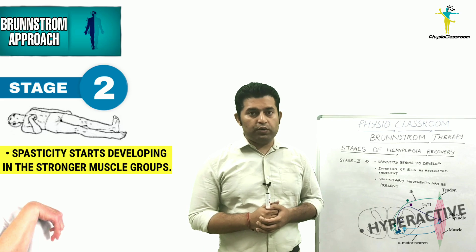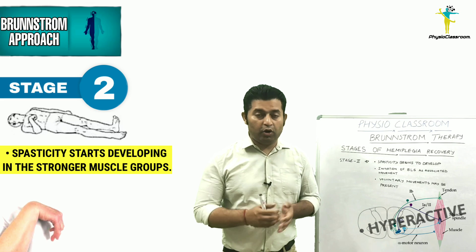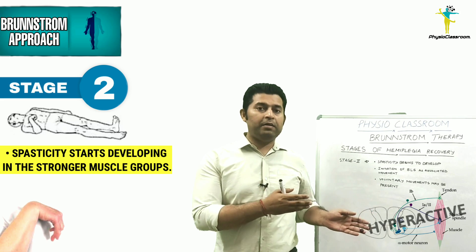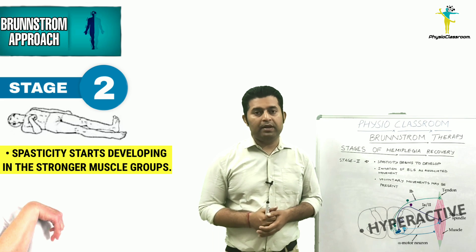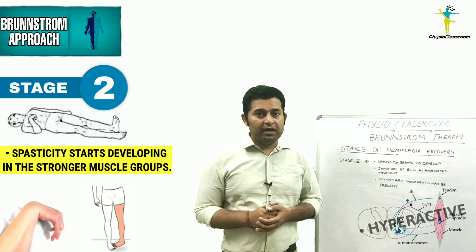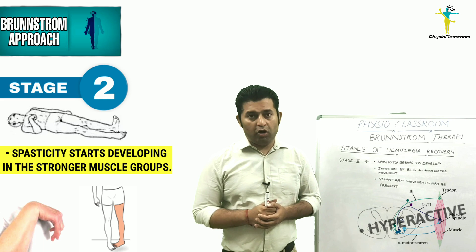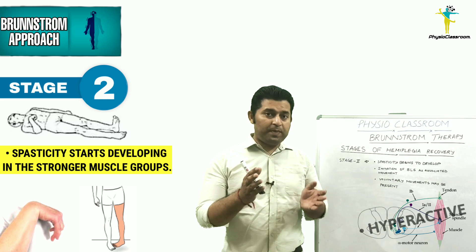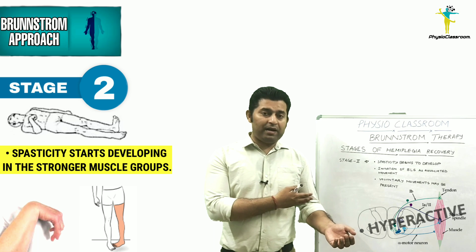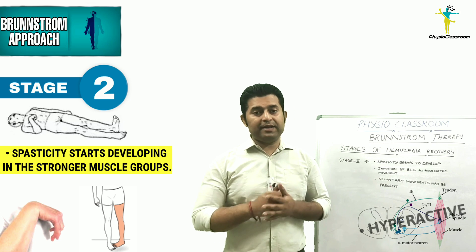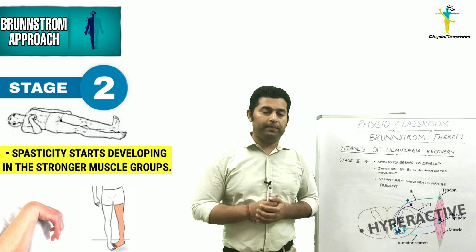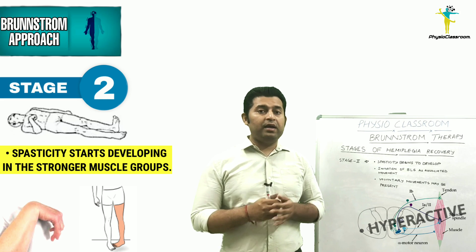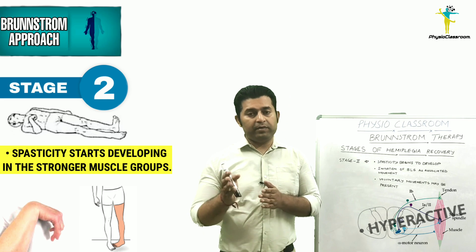Brunström Stage 2 is characterized by the onset or development of spasticity in the hemiplegic upper and lower limb. Spasticity develops first in the strongest components of the flexor and extensor synergy — especially the biceps in the paralytic upper limb and the quadriceps in the paralytic lower limb. The physiotherapist can now very easily feel resistance to passive movements.